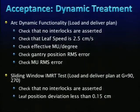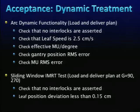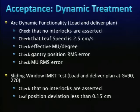Before commissioning begins, the manufacturer provides an acceptance test. For dynamic treatment, one example of acceptance testing for arc dynamic functionality includes checking interlocks, leaf speed, effective MU per degree, gantry position, and MU errors. For sliding window IMRT, they verify interlocks and MLC position accuracy within 0.15 cm.